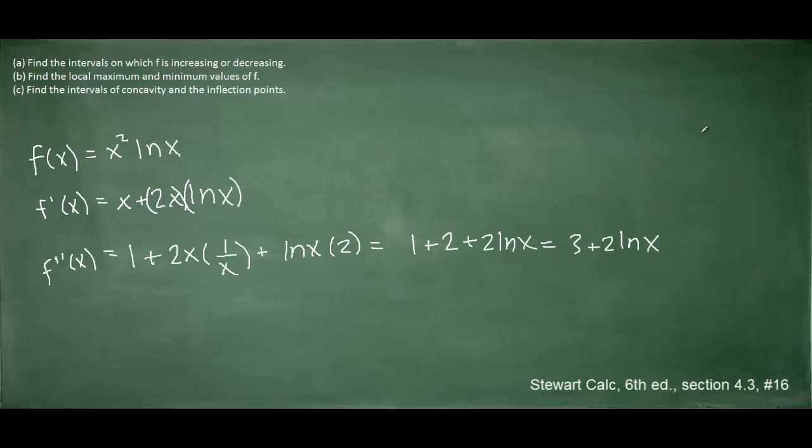To move further, we set the second derivative equal to 0 and solve for x. We subtract 3 and then divide by 2. Just like before, we have the base e, so we raise e to the other side of the equation, and we see that x equals e raised to the negative 3 halves. This is not technically a critical number, but we can still use it on a number line to determine the intervals of concavity.